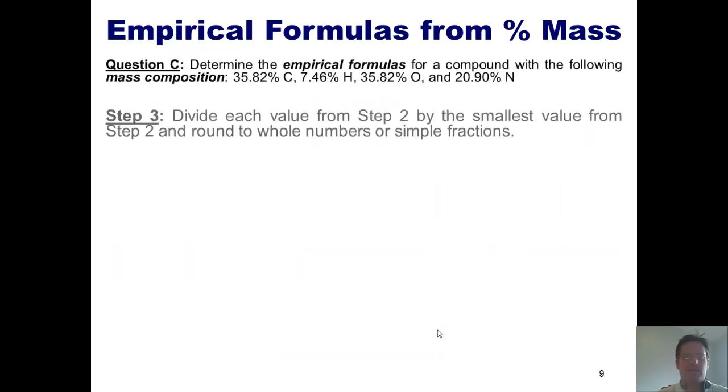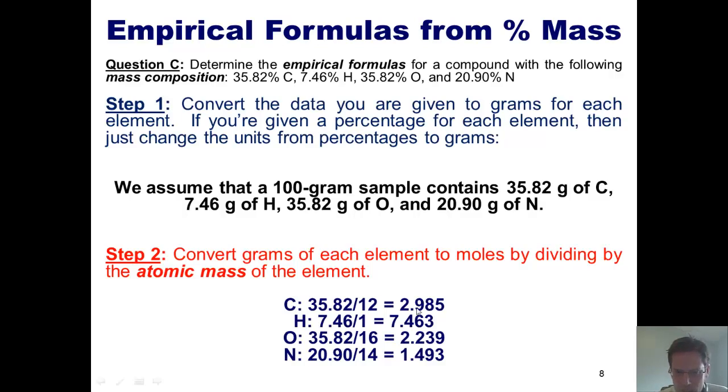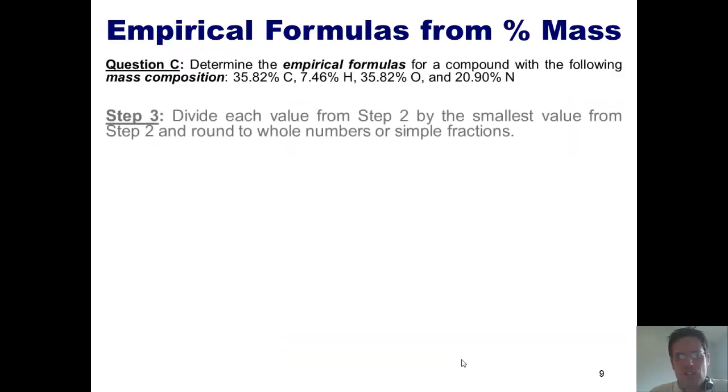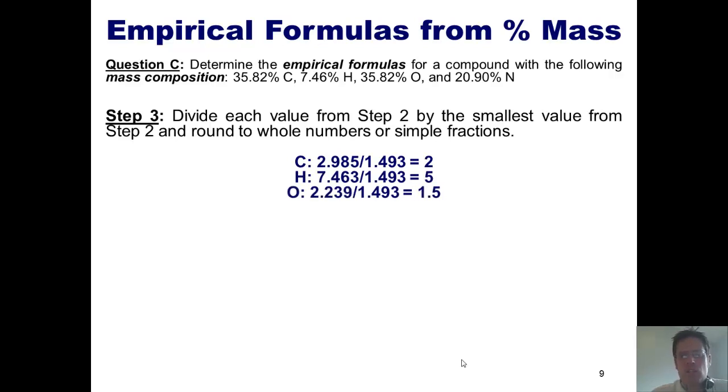Step three, divide each value from step two by whichever of those values was the smallest. So we'll go back. Look at all these numbers. Which of these guys is the smallest? Well, you'll notice that 1.493 is the smallest, which means that in order to do step three, I'm going to divide each one of these by 1.493. Let's go ahead and show that. 2.985 divided by 1.493 gives really close to 2, and I just round it. 7.463 divided by the same gives me 5. 2.239 divided by 1.493 gives me 1.5. And 1.493 divided by itself gives me 1.